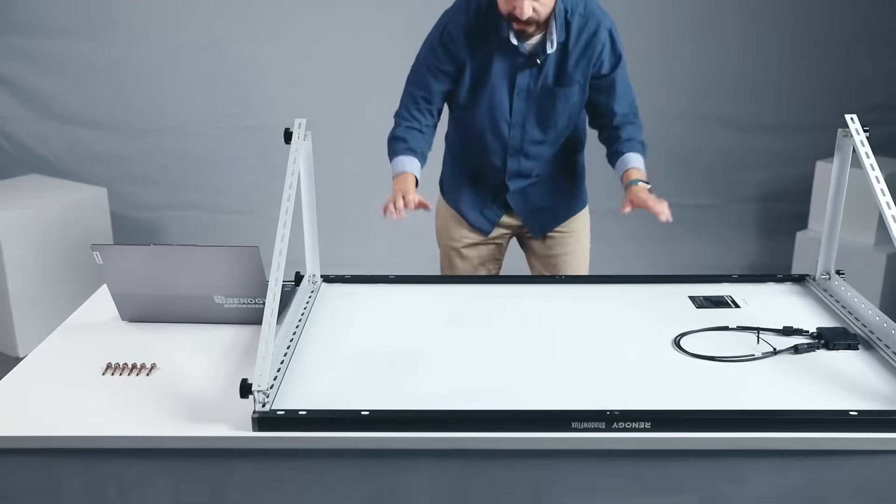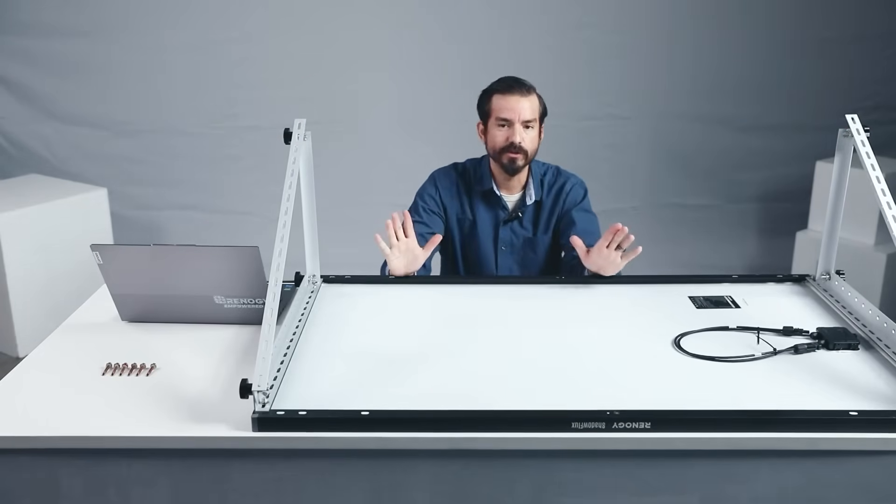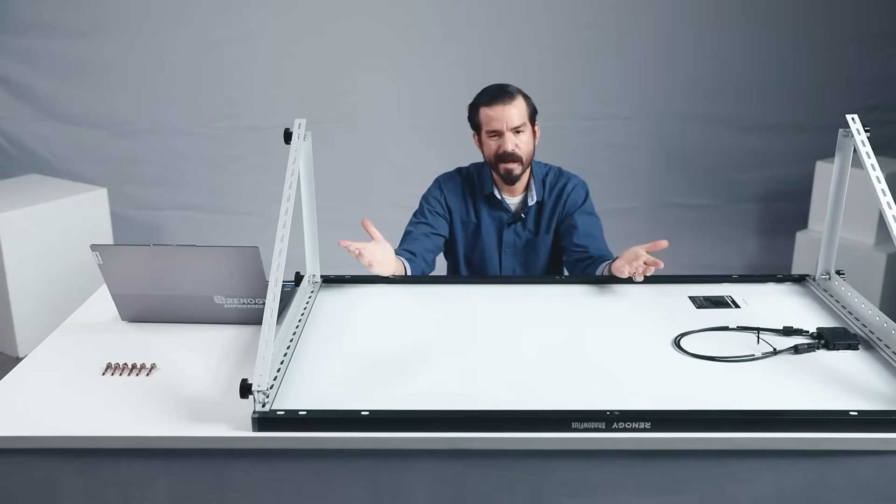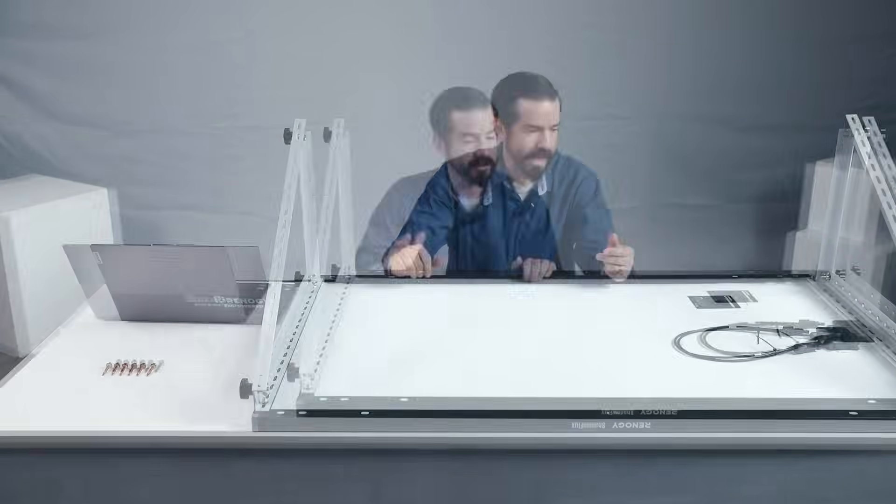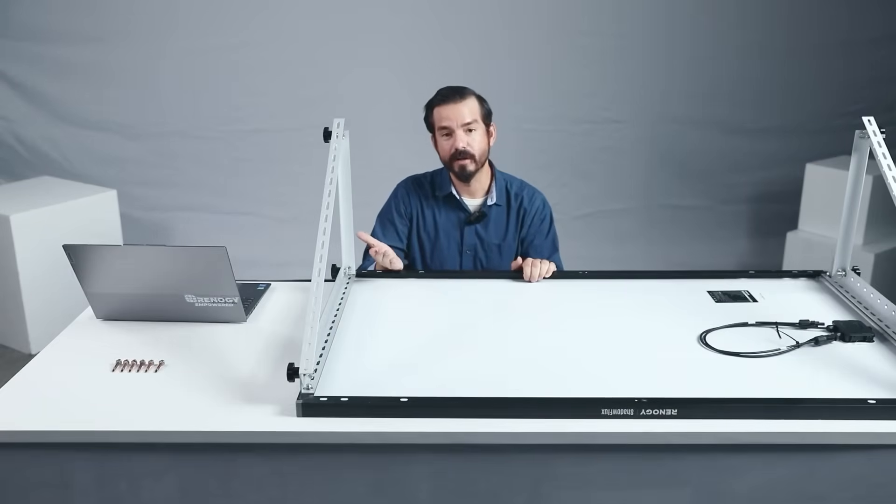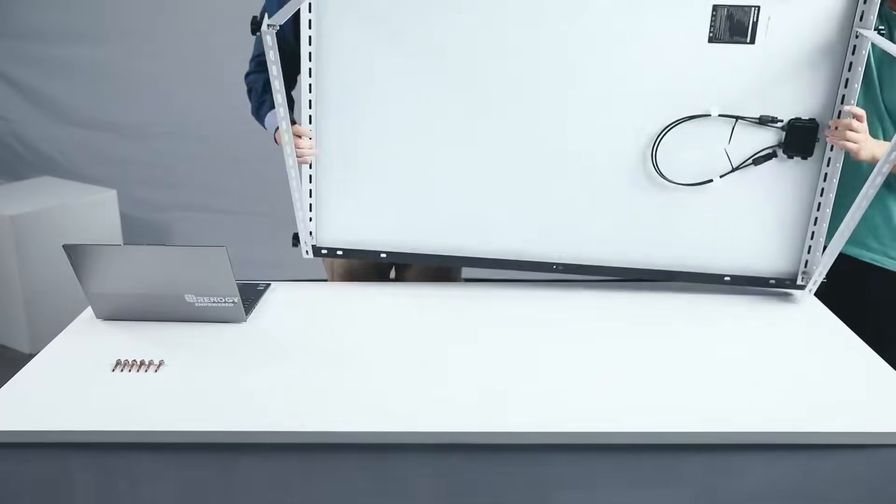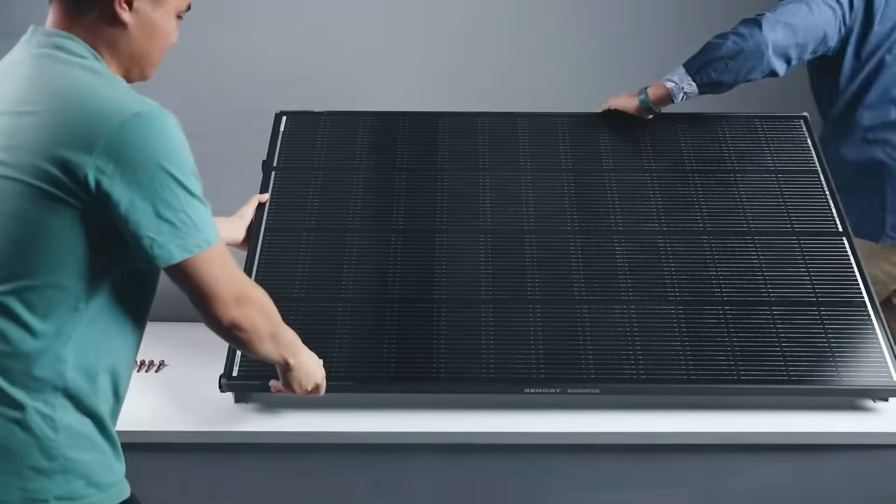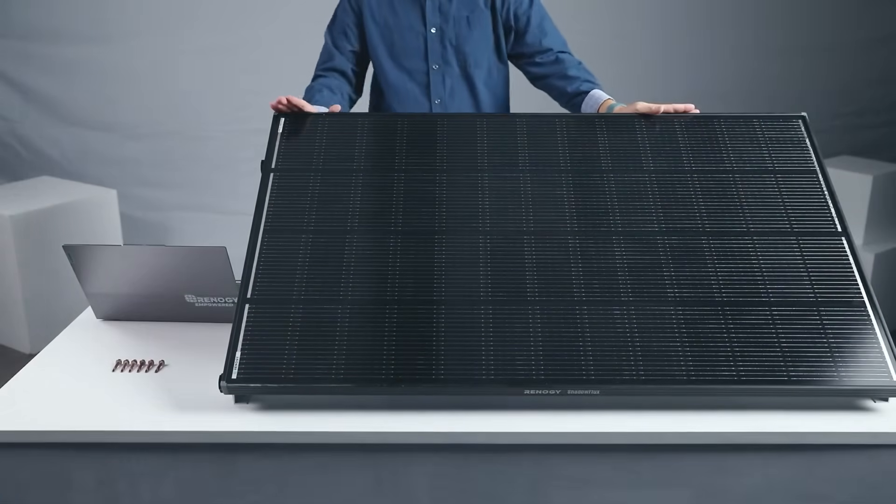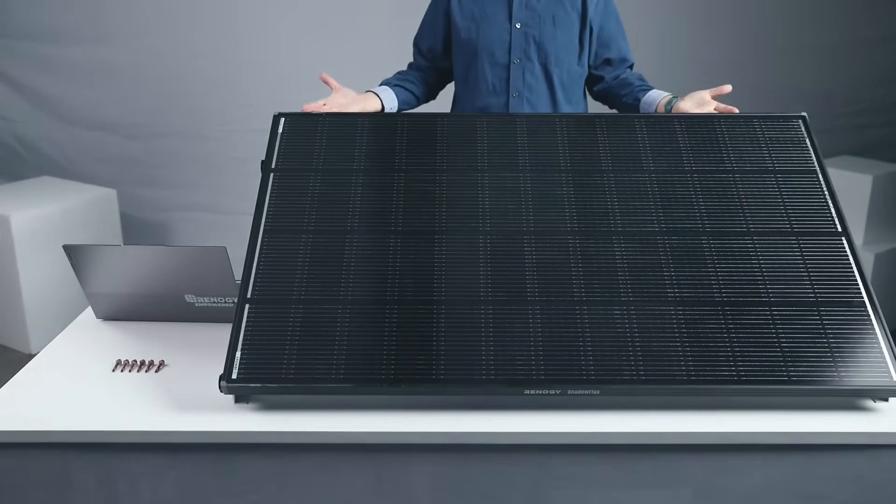And there you have it, just like that. We just installed the RV tilt mount to our Shadow Flux panel in a couple minutes. It really didn't take too long. So now we're done, let me go ahead and flip it over. I'm going to get one of my colleagues to help me and we're going to show you exactly how it looks. And there you have it, we have our Shadow Flux panel all mounted, ready to be used.